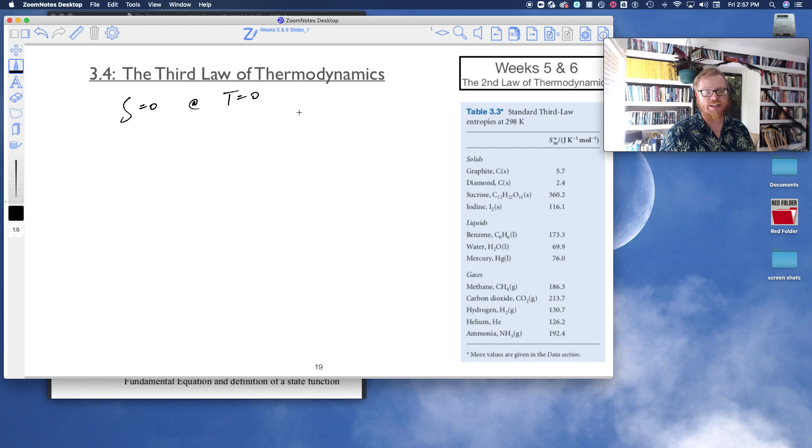And this comes from the idea of the statistical definition of entropy, S equals KB natural log of W. And if we go into hideous detail with our molecular partition functions, we would find that W equals one when T equals zero, so there's only one state of the system at zero Kelvin. And then, of course, when the natural log of one is zero, so this just gives us entropy equal to zero.